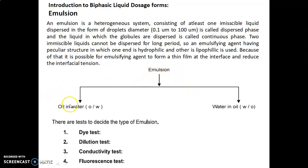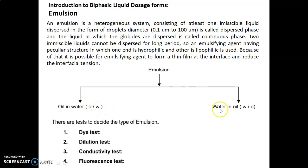The simple classification of emulsion is oil-in-water (O/W) type and water-in-oil (W/O) type. In the O/W type, oil is the internal phase while water acts as the external phase. In the W/O type, water is the internal phase while oil is the external phase. There are tests to decide the type of emulsion.